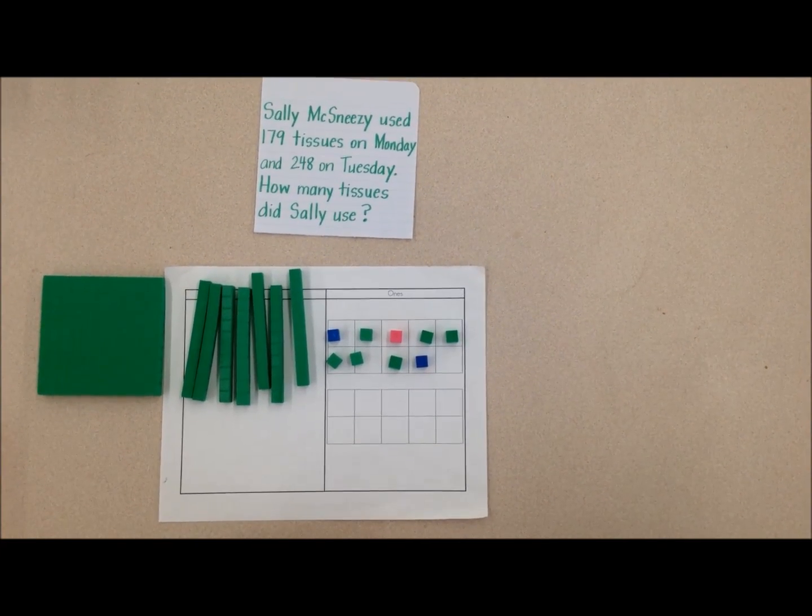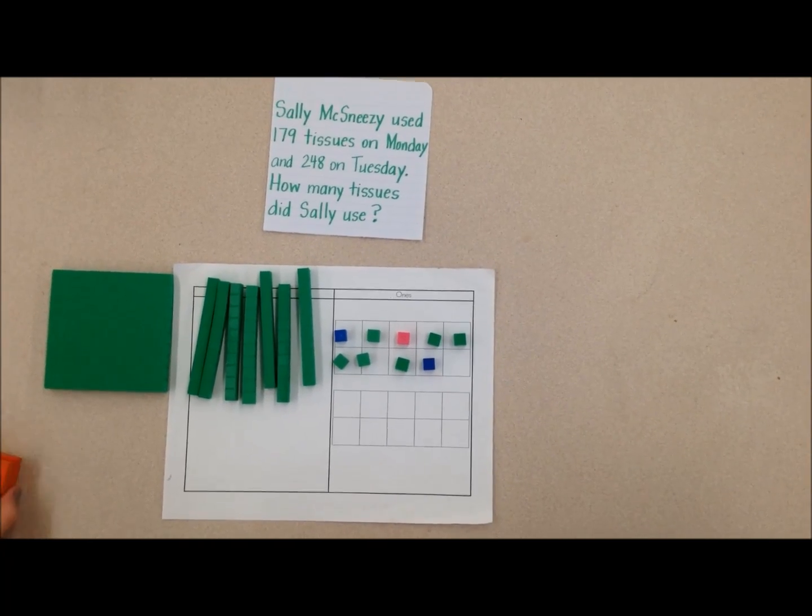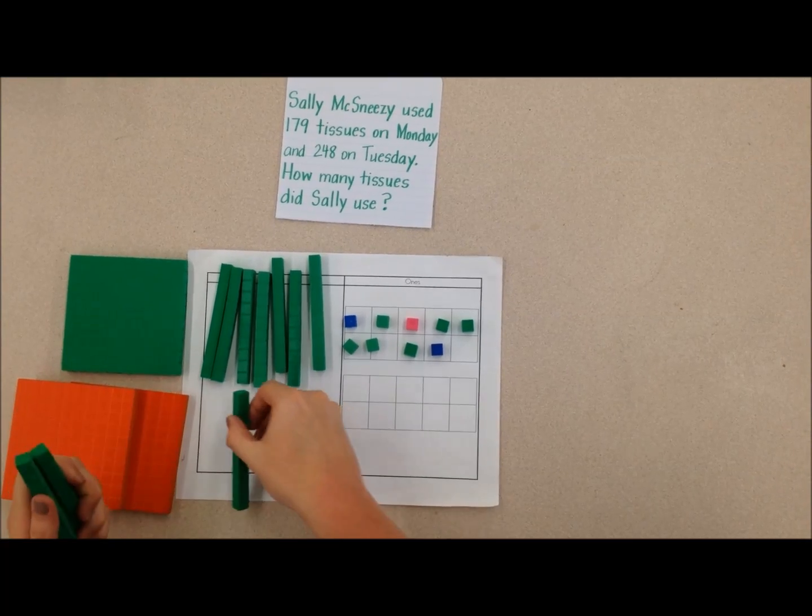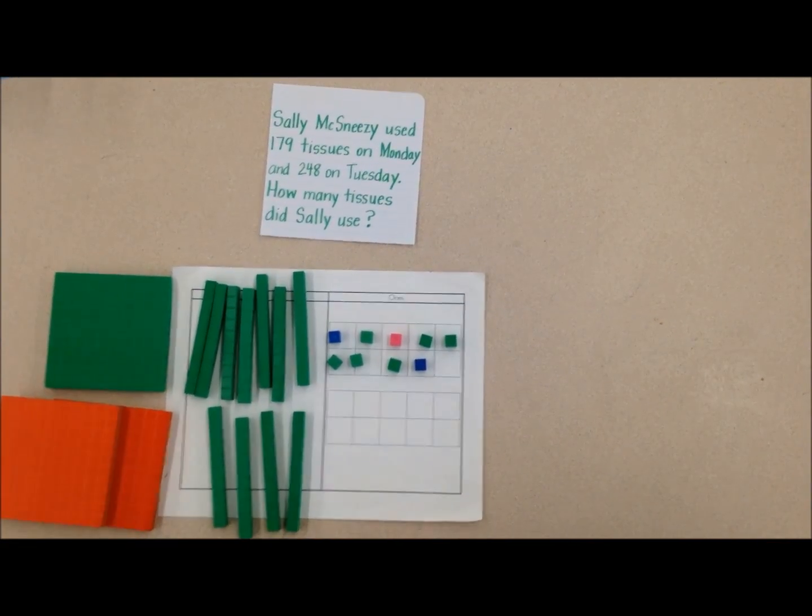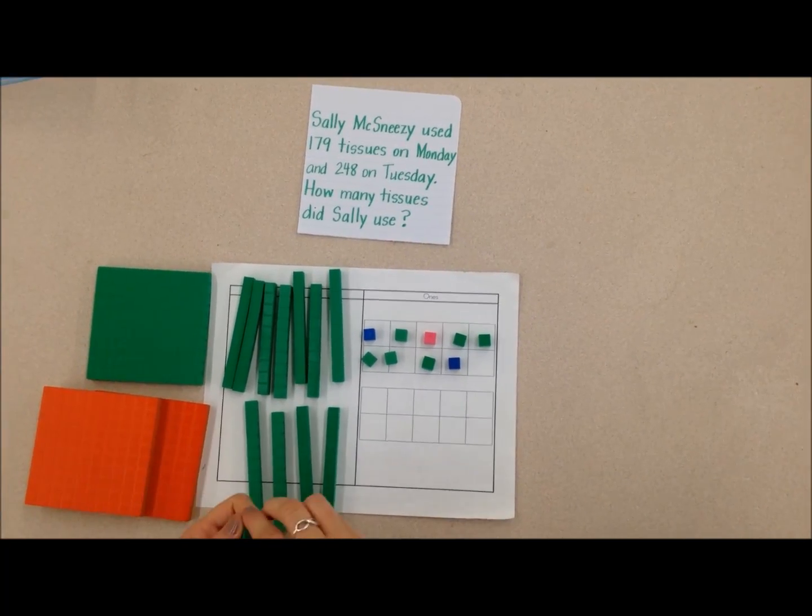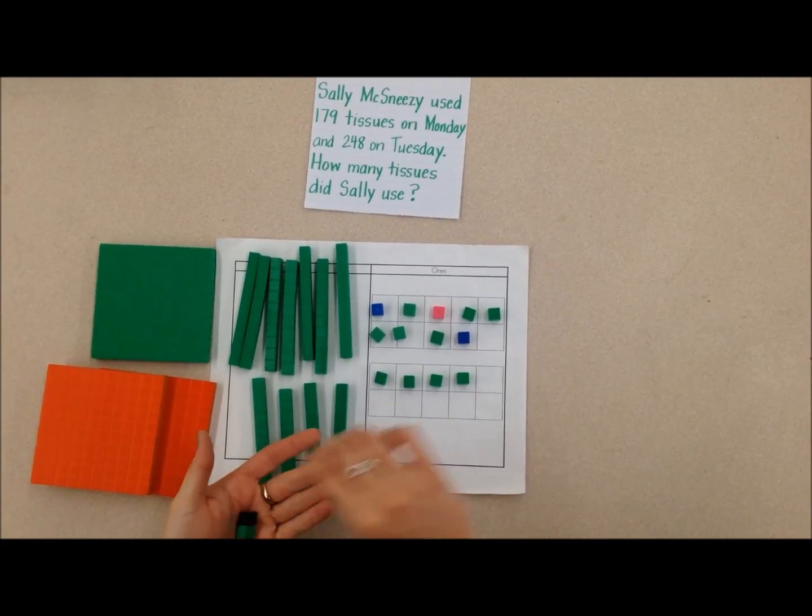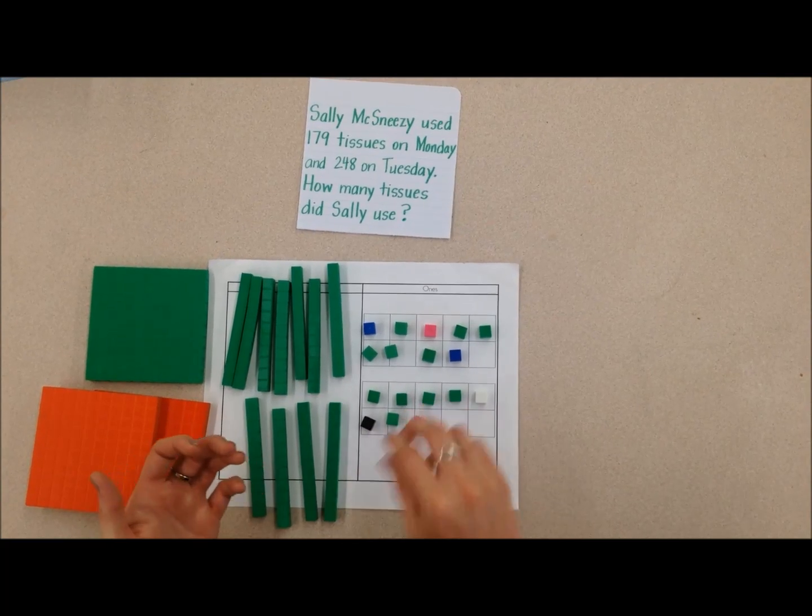Okay, that's what she used on Monday. On Tuesday, she had 248, so that's 200, 1, 200, 4 tens, 1, 2, 3, 4 tens, and 8 ones. 1, 2, 3, 4, 5, 6, 7, 8.